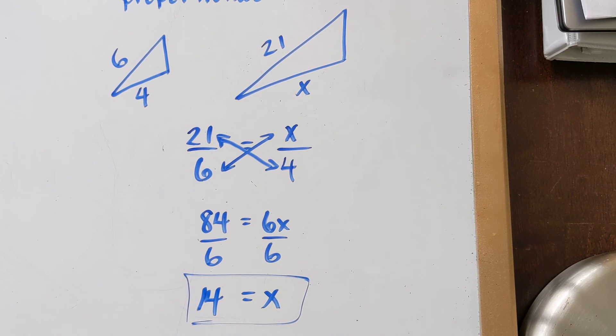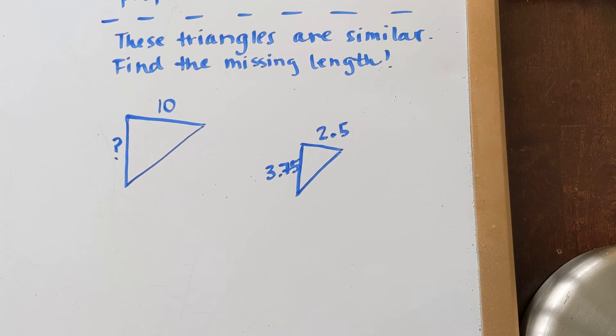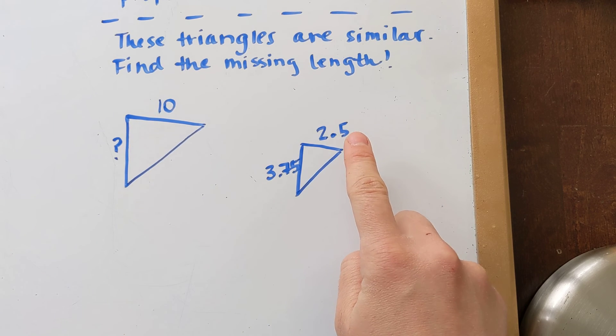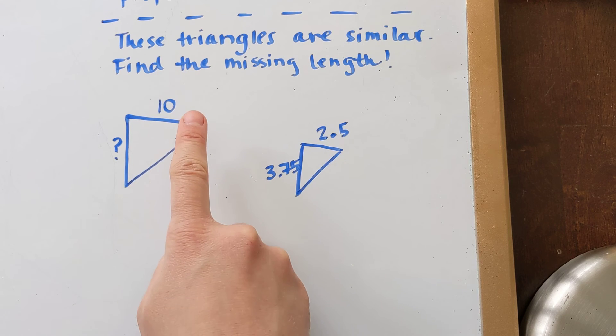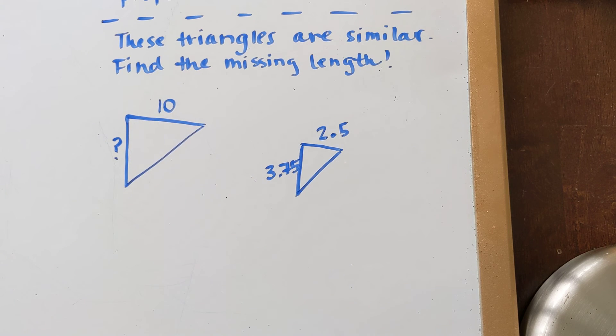So that missing side length there is 14 units. I am going to have one more example and I want you to try it without me. Here is your example. I have two triangles, I am told that they are similar, and I want to find the missing length that is right here. This side is 2.5, this side is 3.75. I have a side of 10 and that is my missing side. Go ahead and pause the video and see if you can get this.